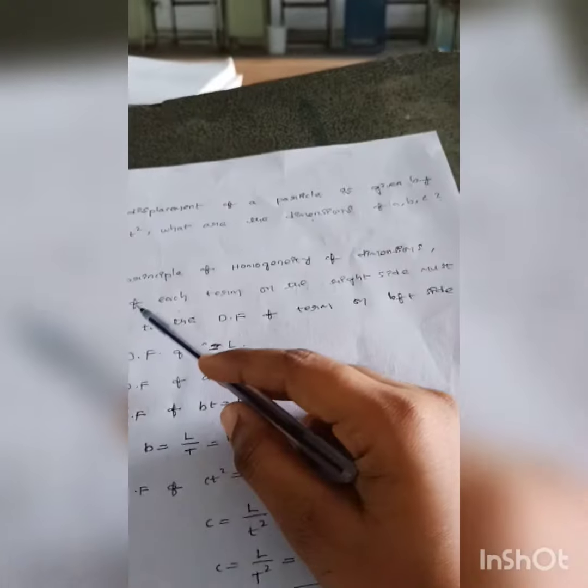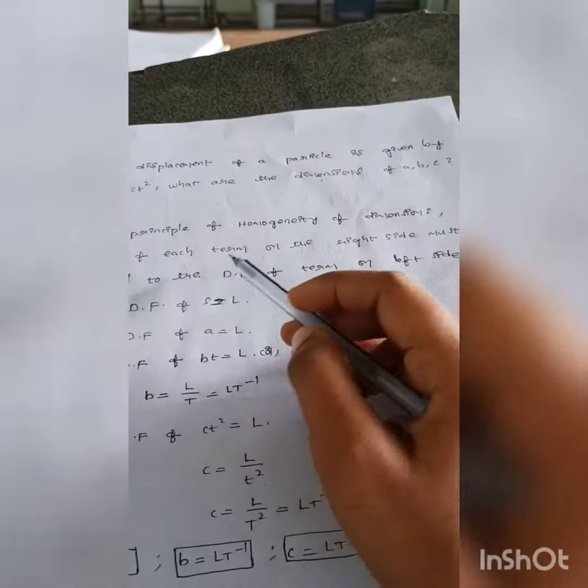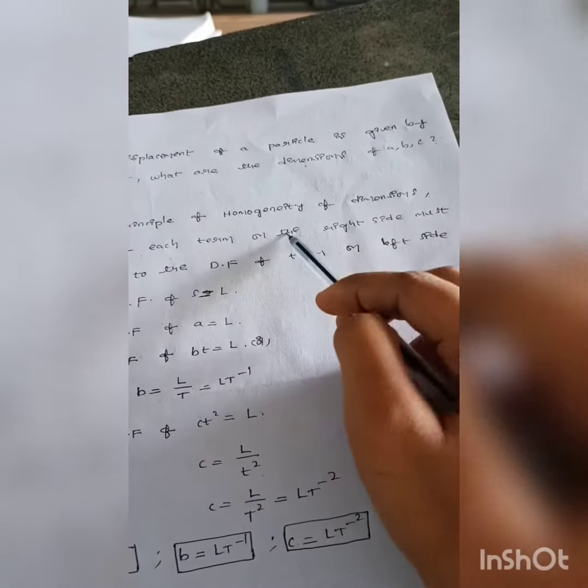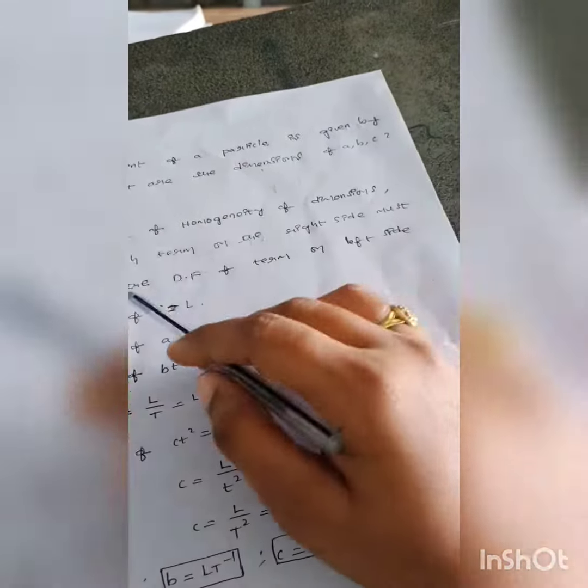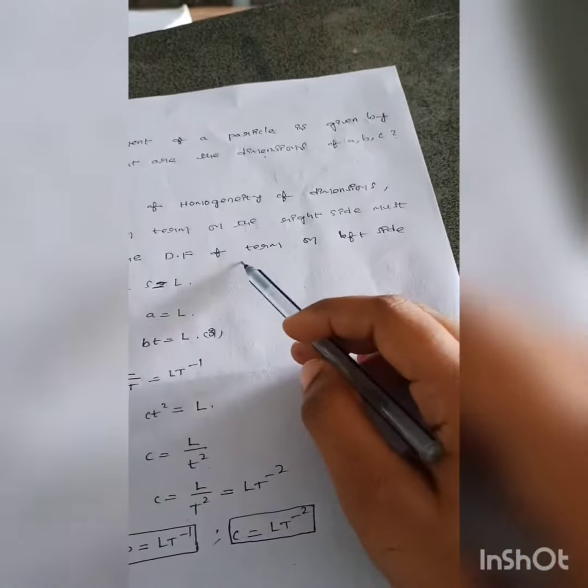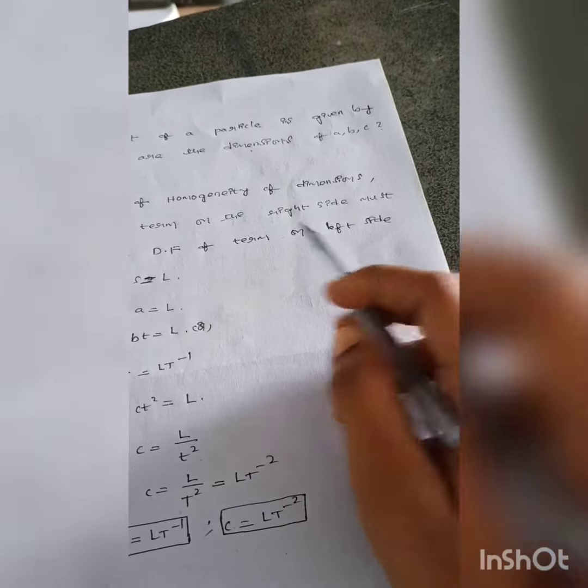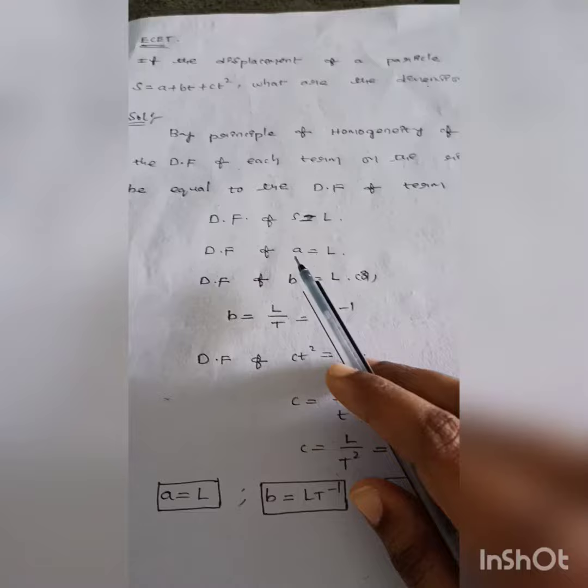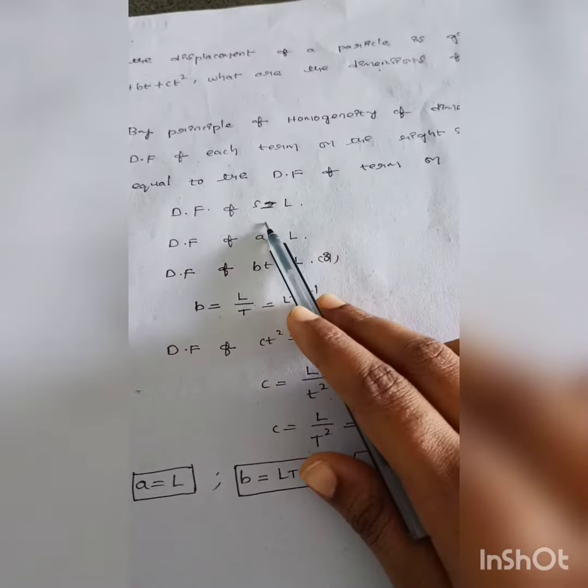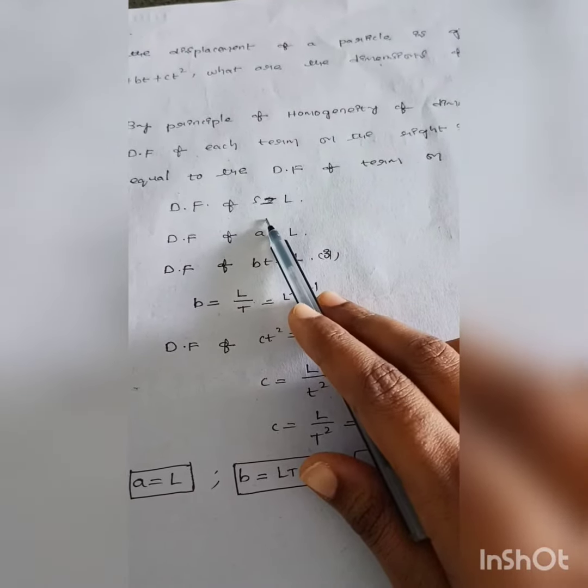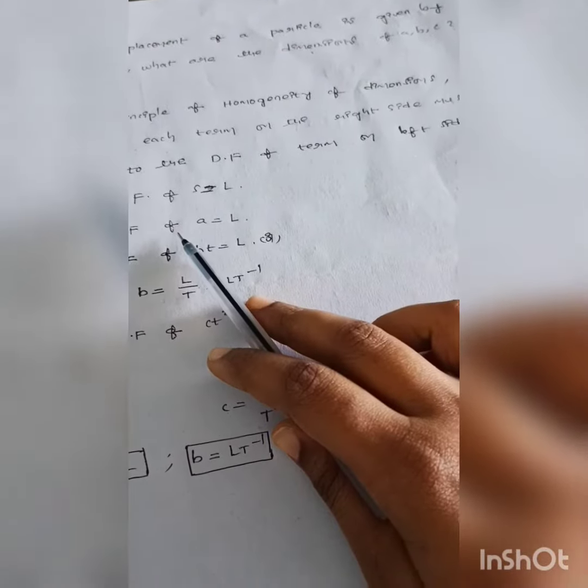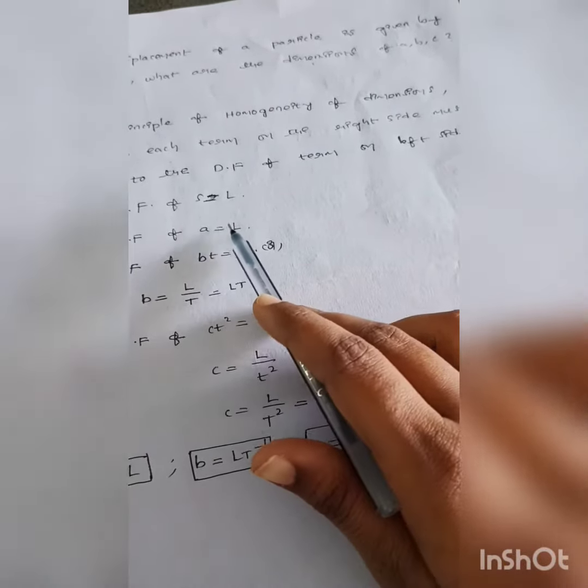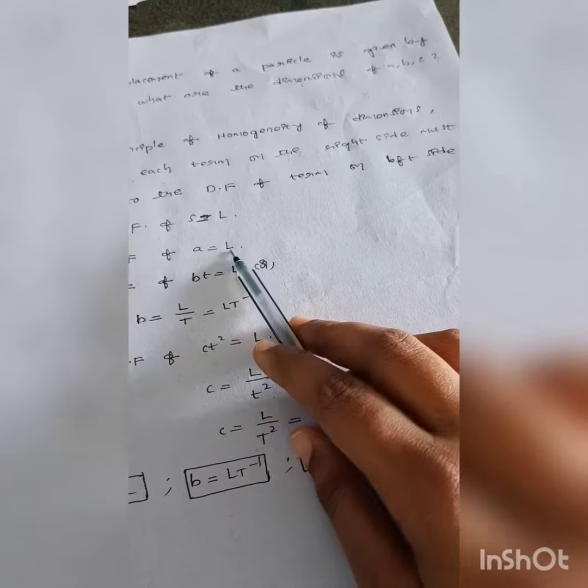The dimensional formula of each term on right side must be equal to dimensional formula of left side. Dimensional formula of s is on left side, s is equal to L. Dimensional formula of a is equal to L.